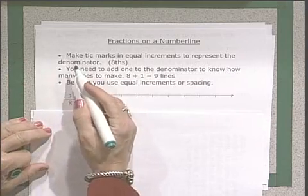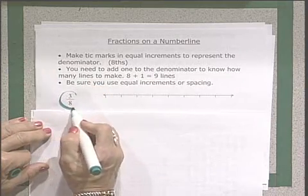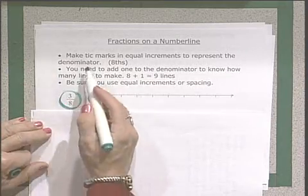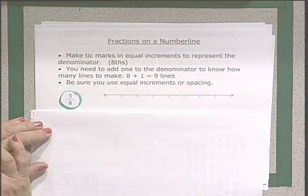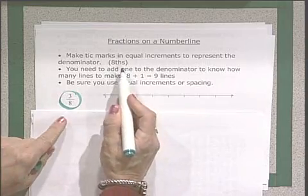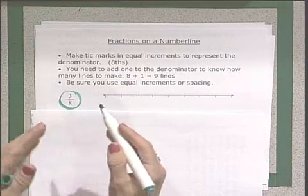The first thing you need to do, once you have your fraction, we're going to work with three eighths. Make tick marks in equal increments to represent the denominator. So we have eighths, we need eight equal spaces.